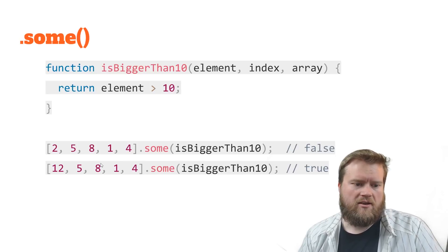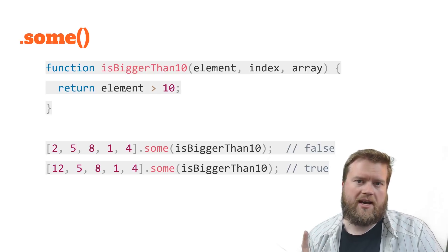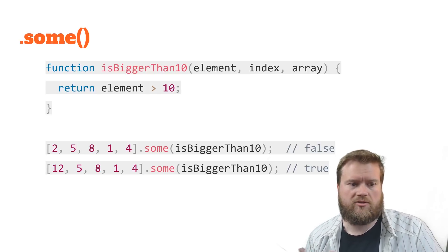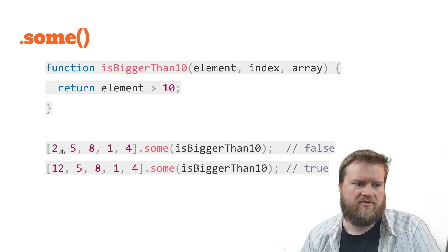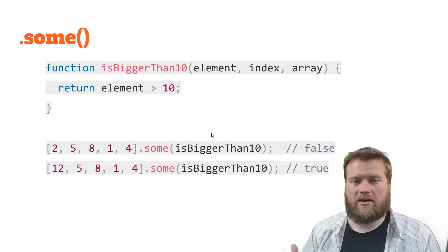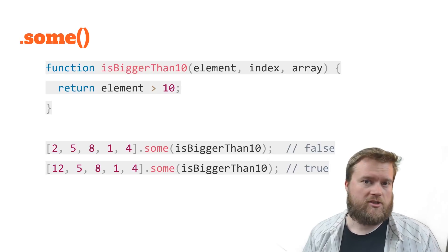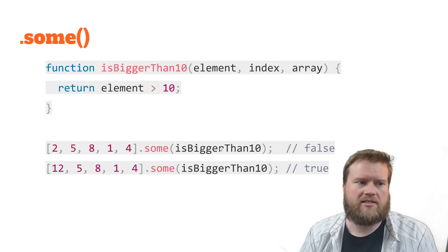On the other hand, one of the first one is bigger than 10, so it returns true. So only one value has to pass for it to be true. And since none of these values are bigger than 10, it's false, but one of these values is, so it's true. Now there's every, which maybe we'll look at too, which you have to have every value be true for it to pass, otherwise it's false.